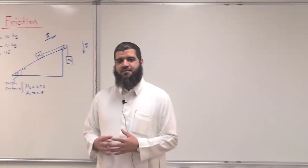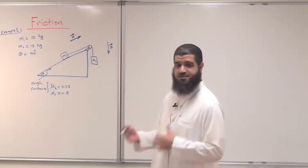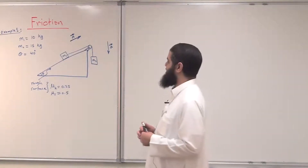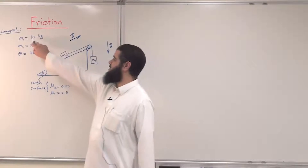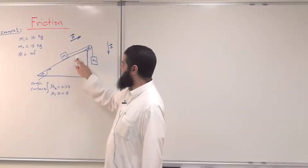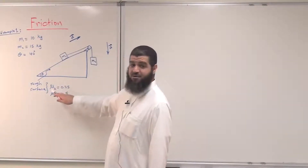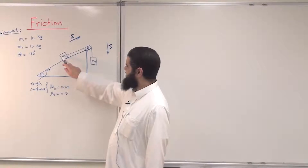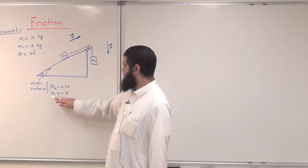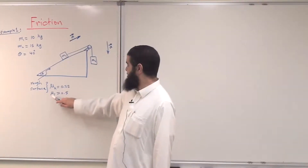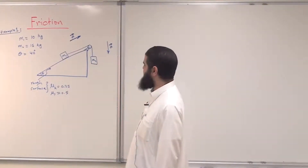Bismillah ar-Rahman ar-Rahim. Now dear students, it is time for examples on friction — motion with friction involved. This is our first example: we have two masses, m1 which is 10 kilograms on an incline, and this incline is a rough surface. The coefficient of kinetic friction between m1 and this surface is 0.25.